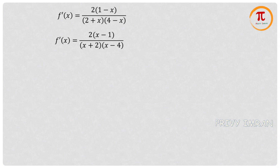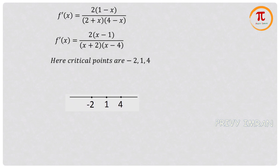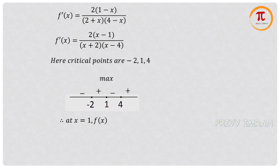The critical points are x = -2, 1, and 4. Drawing the wavy curve method on the number line with these critical points, at x = 1 the function changes from positive to negative. Hence, we can conclude that at x = 1, the function attains its maximum value.